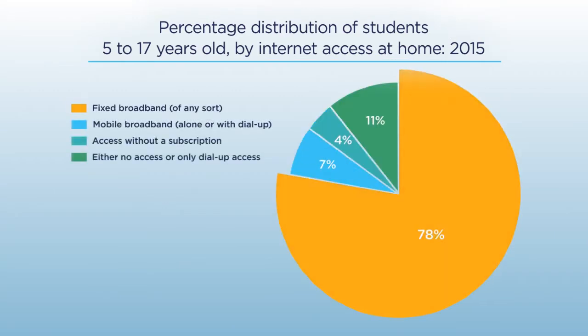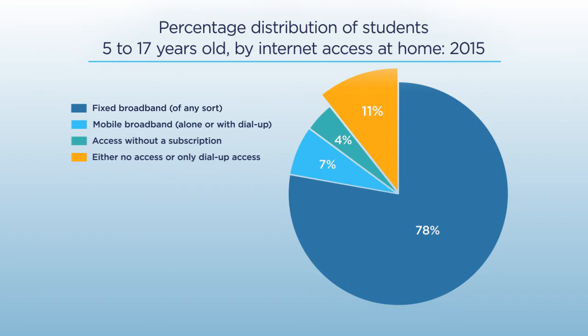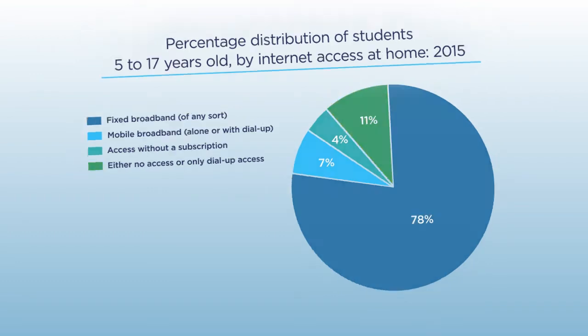About 78% of students had access to the internet at home in 2015 through fixed broadband. 7% had access through mobile broadband. 4% had access without a subscription. And 11% of students had no access to the internet or only dial-up access.